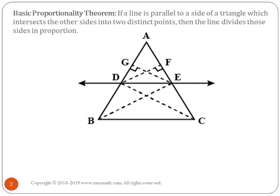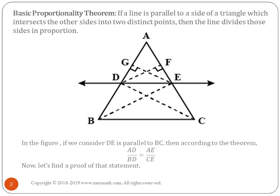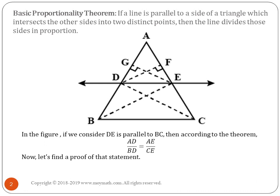We will show how the construction has been made and what the purpose behind it is. In this figure, if DE is parallel to BC, then according to the theorem: AD/BD = AE/CE. Now let's find a proof of that statement — you are going to see how the proof works.